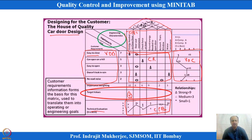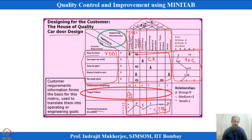One voice shown here is 'easy to close' for car door design — the customer wants it to be very easy to close. Engineers determined that 'easy to close' is highly related to the energy needed to close the door, and door seal resistance is another CTQ that influences how easy it is to close the door.